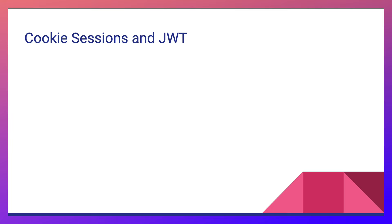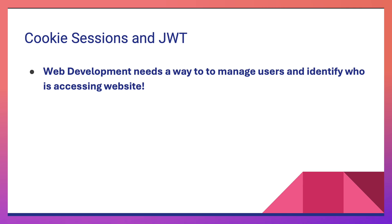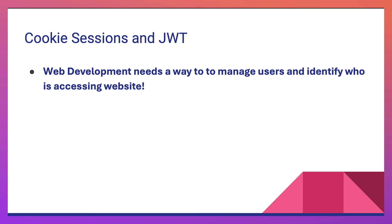Cookies, sessions, and JWT are primarily used for web development — it's a way to manage users and identify who's accessing a website. Let's say you want to create a website where you want to manage who is logged in or logged out, maintain a shopping cart, or place an order — you can definitely do all of this with the help of cookies, sessions, and JWT tokens.